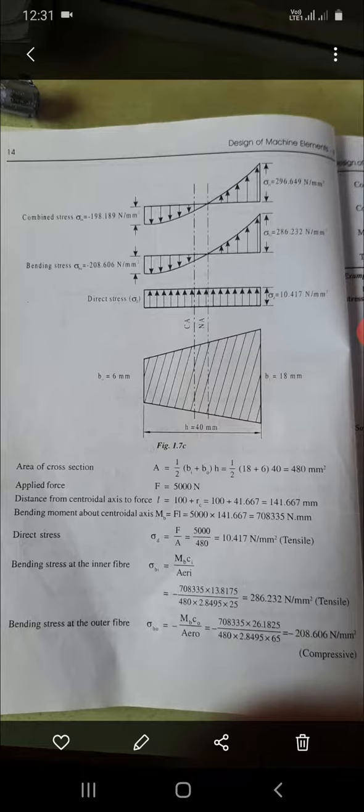Inner side is tensile, outside is compressive. We get 286 MPa as tensile stress. For outer fiber, substituting values, we get 208 MPa as compressive. The combined stress σRI = σD + σBI, adding both tensile components.